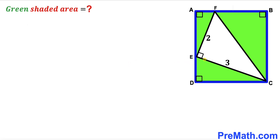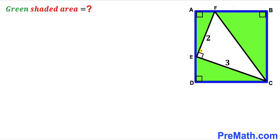Welcome to pre-math. In this video we have a white right triangle CEF fully inscribed in a blue square. This side length of the white triangle is 2 units, the side CE is 3 units, and angle CEF is 90 degrees. Our task is to calculate the area of the green shaded region — the area of the right triangle and the remaining regions combined.